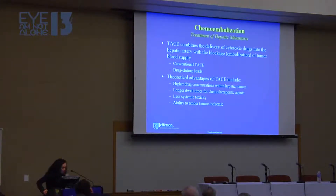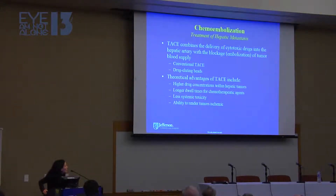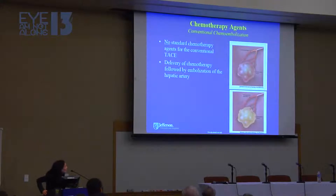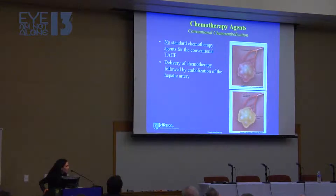Chemoembolization combines the delivery of cytotoxic drugs into the hepatic artery with blockage or embolization of the tumor blood supply. There's both conventional TACE and drug-eluting beads. The theoretical advantages include higher drug concentrations within the tumor, longer dwell times for chemotherapeutic agents, less systemic toxicity, and the ability to render tumors ischemic. In conventional chemoembolization, we infuse the chemotherapy agent first and then block blood flow to the tumor using gel foam. There are no standard chemotherapy agents for this particular treatment.